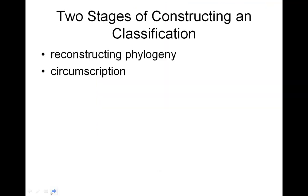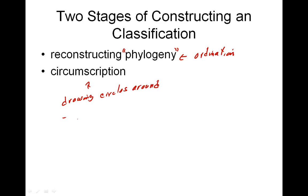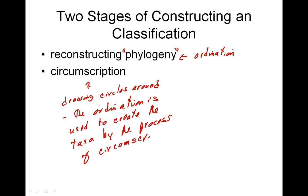In our study of evolutionary systematics and phonetics we've seen two stages in constructing a classification: reconstructing the phylogeny, and circumscription. The first stage is called ordination — a general term for making order out of data, which can be a phylogenetic tree as in cladistics, or a dendrogram as in phonetics. The second part is circumscription, which means drawing circles around — using the ordination to create the taxa.